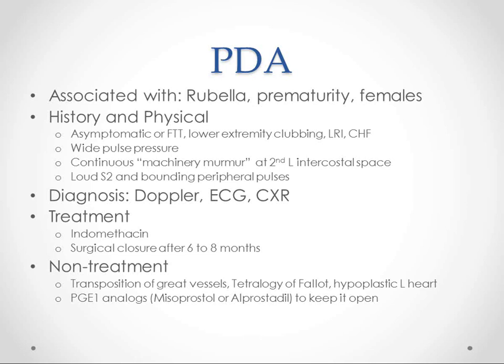On exam, you hear a continuous machinery murmur. That machinery murmur, if you see it on a test, is pathognomonic for patent ductus arteriosus. You hear it all the time because there's always pressure in the aorta — the aorta is a little stretchy and squeezes down afterward, pushing blood through the patent ductus arteriosus. You're most likely to hear it at the second left intercostal space, which is where we listen for the pulmonic artery. You also hear a loud S2 and have bounding peripheral pulses. Diagnosis is done with Doppler, EKG, and chest x-ray.